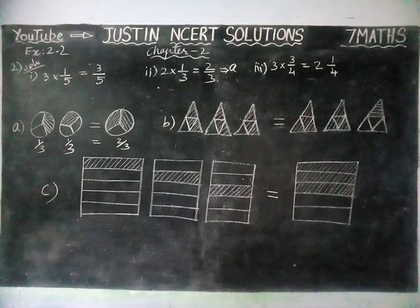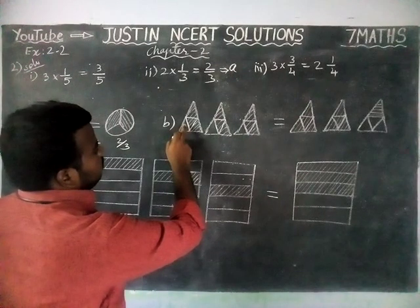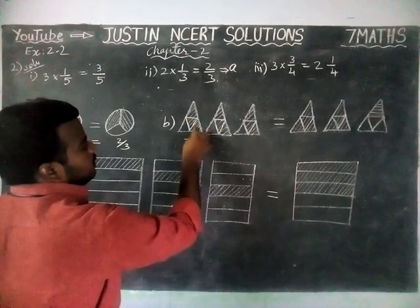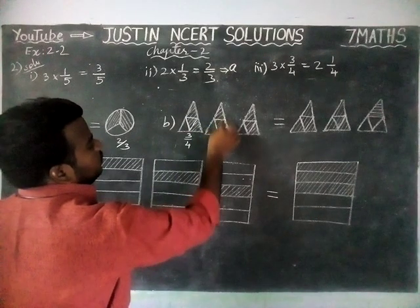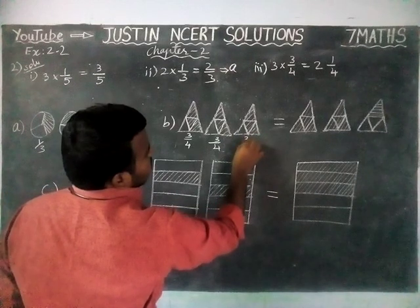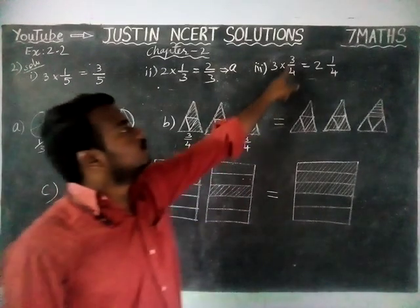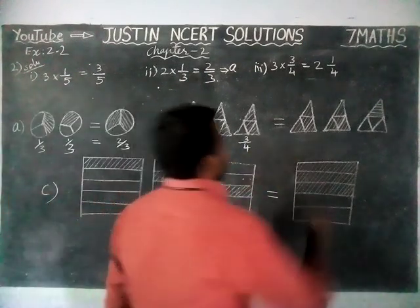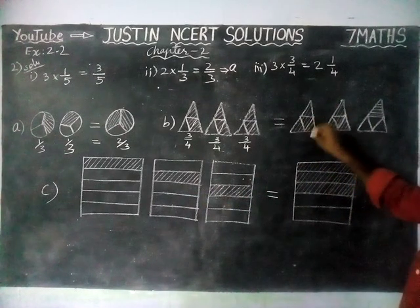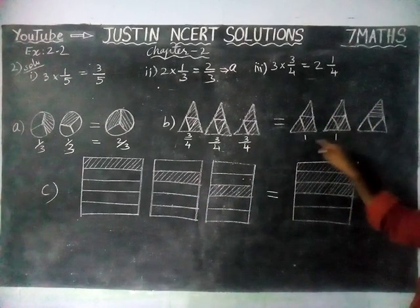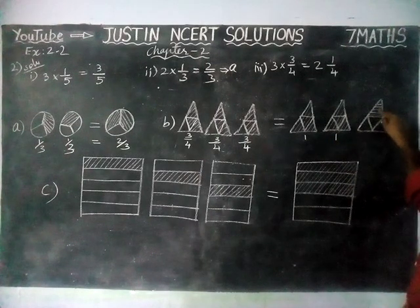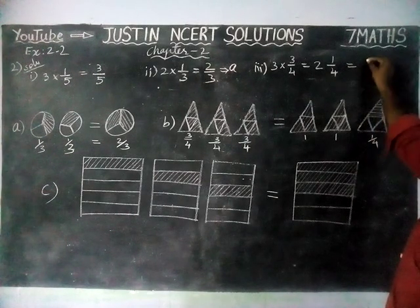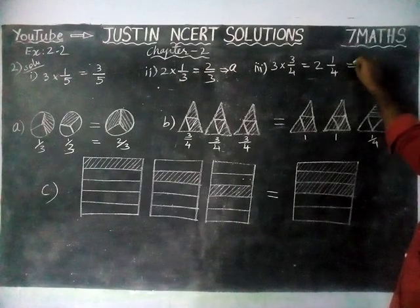Next, we will check it — one, two, three, four. Out of four, one, two, three is added, so three by four. Next, here also one, two, three, four — three by four. And here, two triangles are fully added: this is one and this is one, one plus one is equal to two. And here, four parts — out of four, one is added, so one by four. So this answer is equal to Option B.